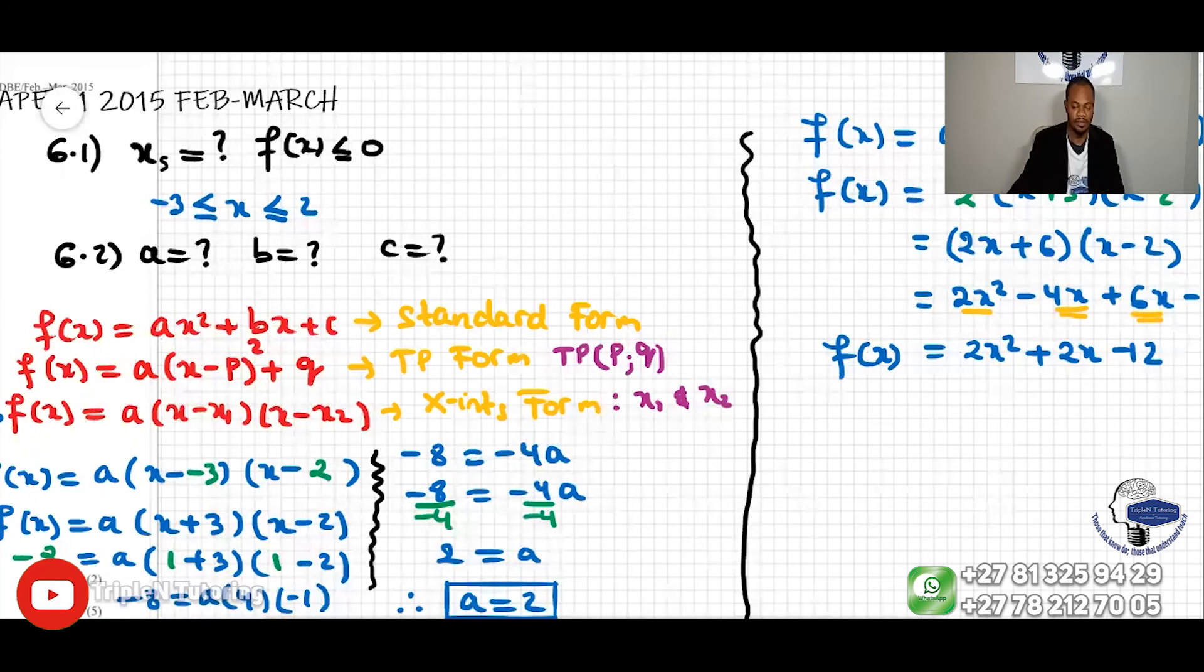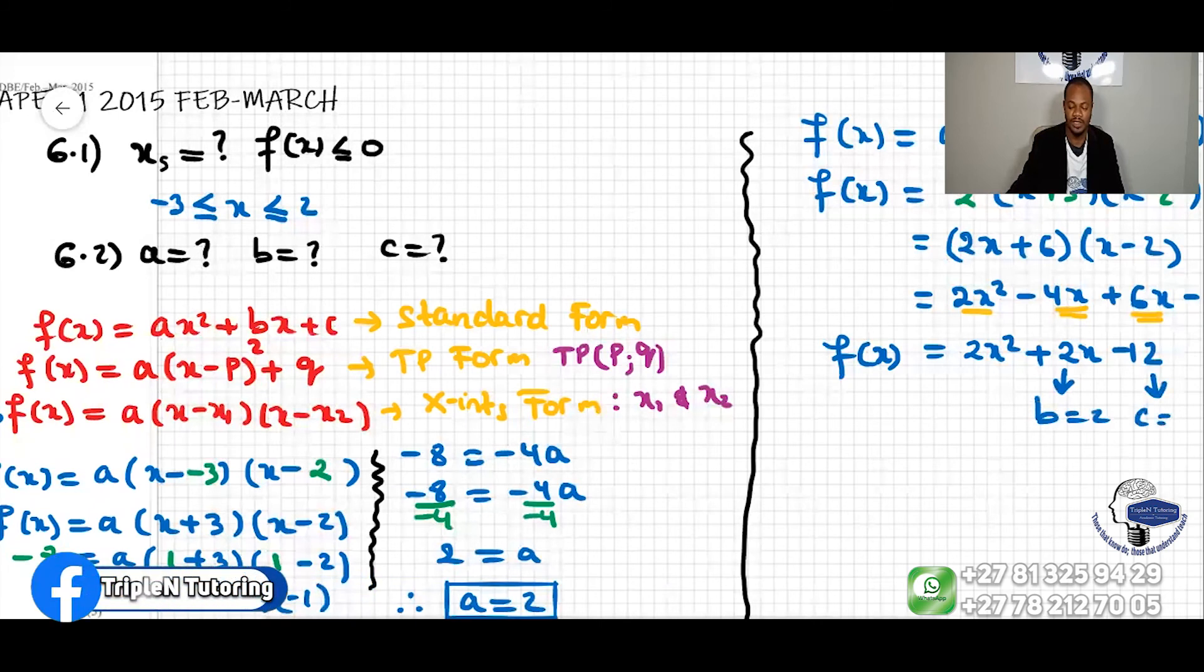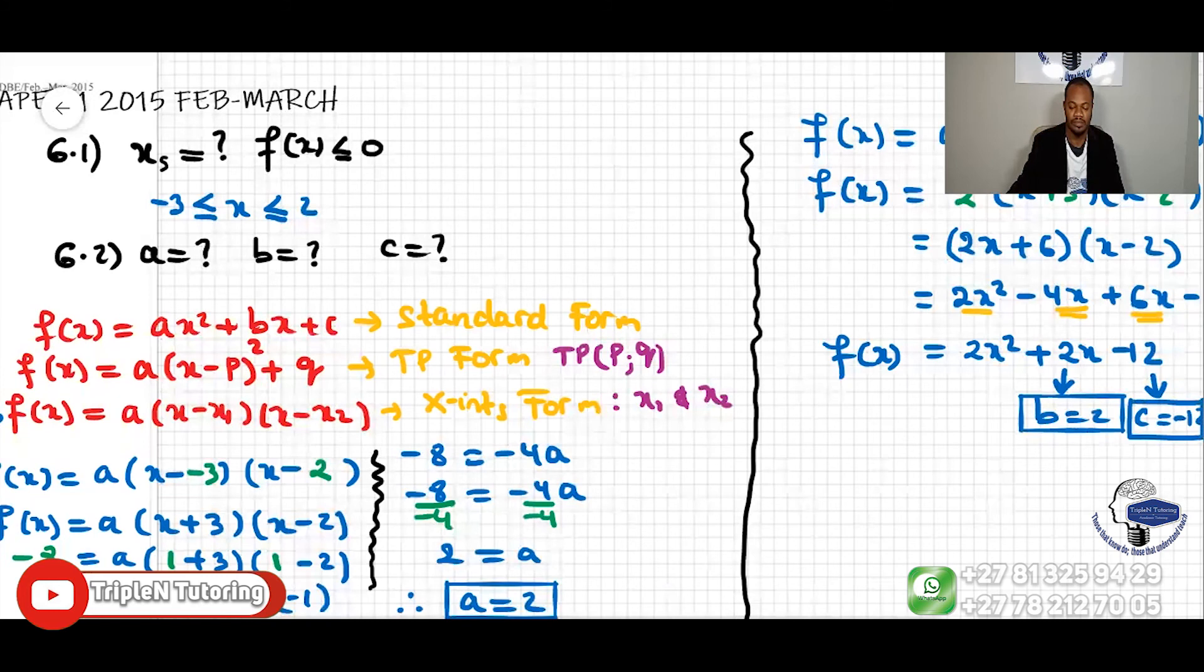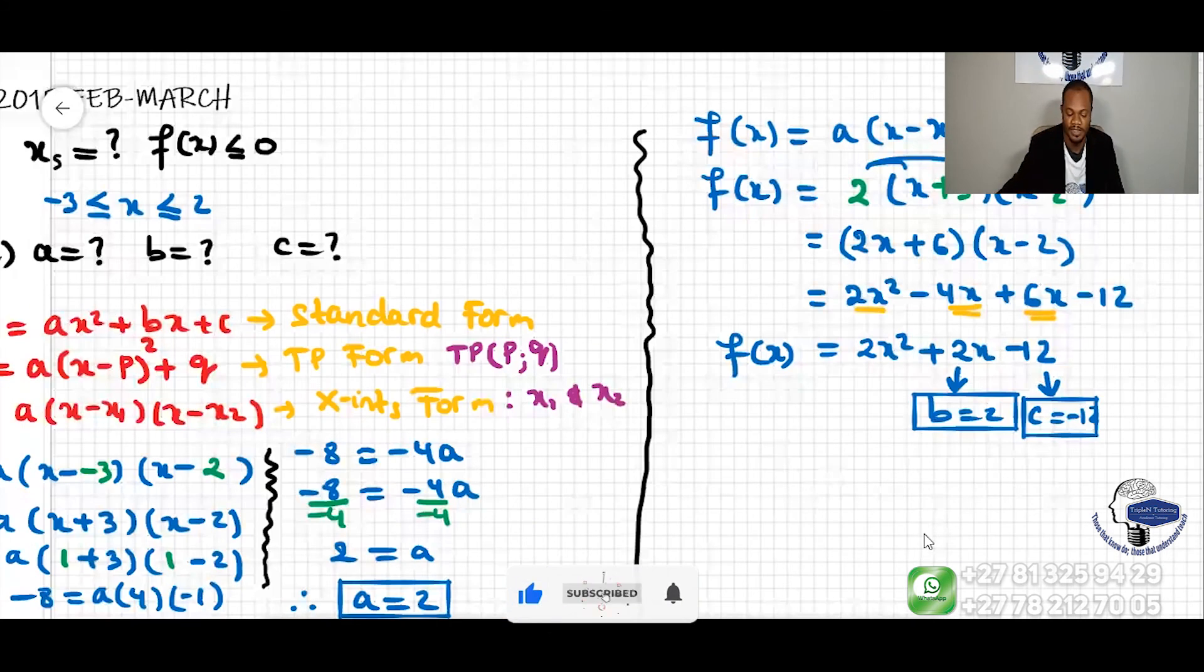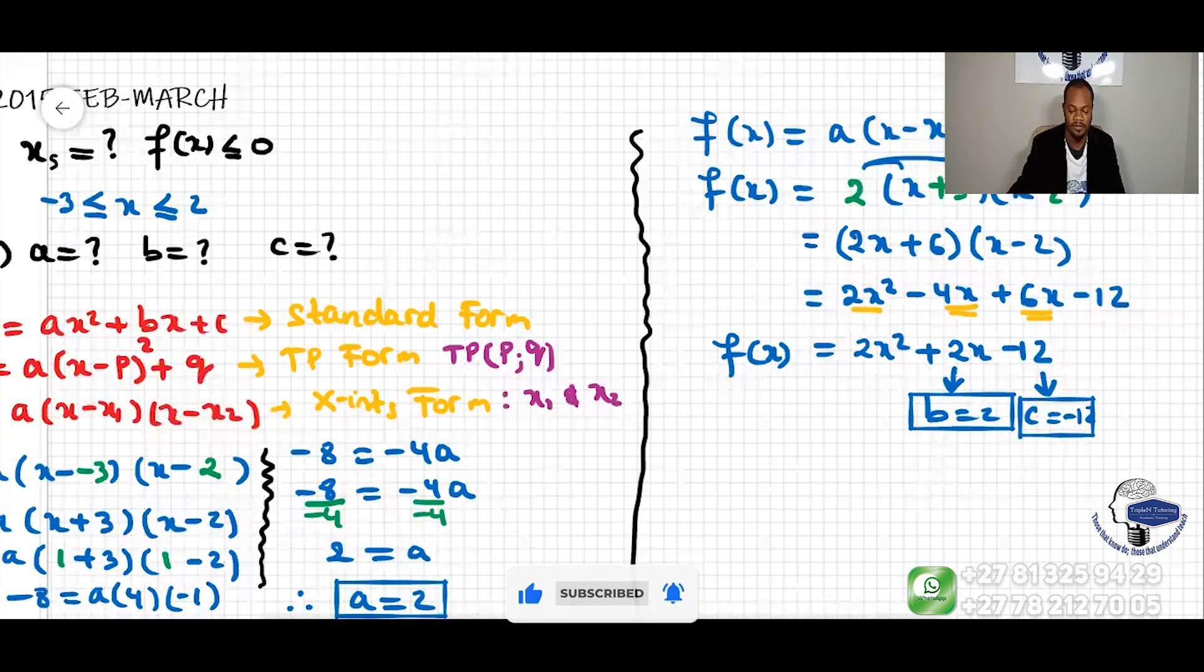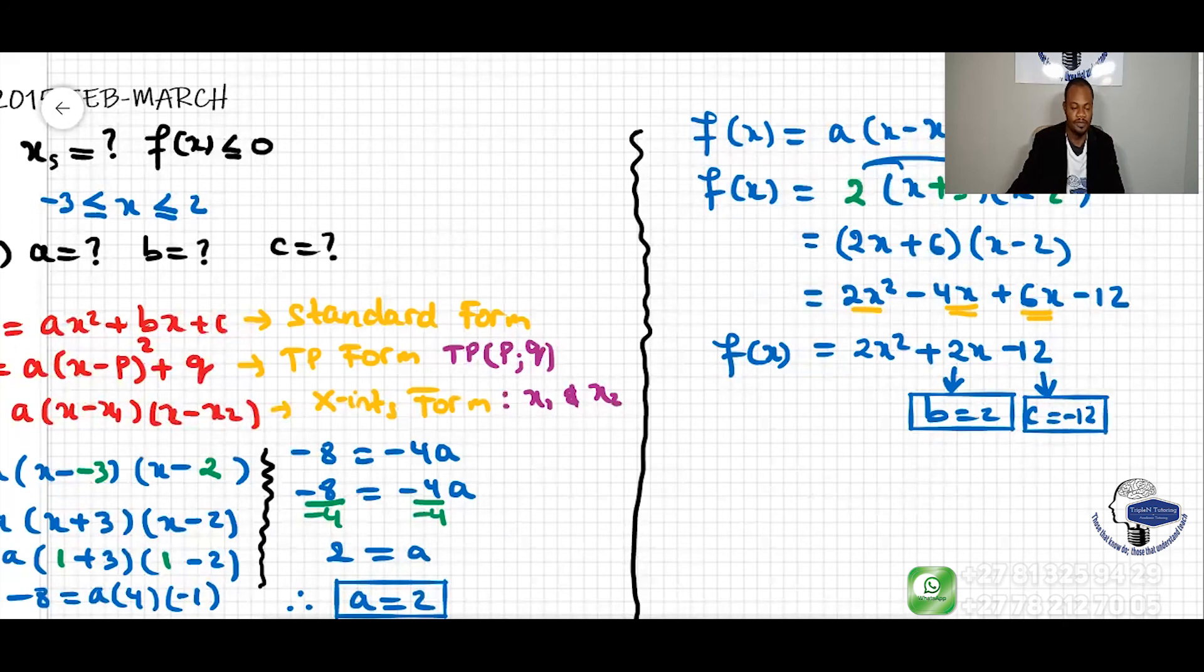So here we can just say b equal to 2, and then c is -12. So we found the value of a, b, and c. C equal to -12. Thank you.